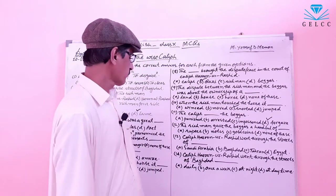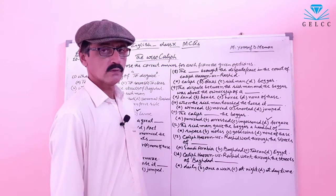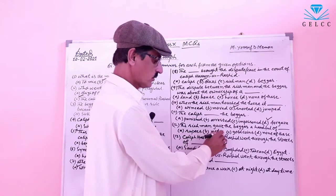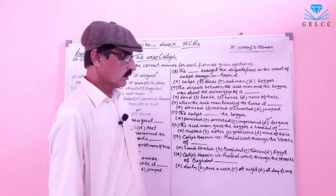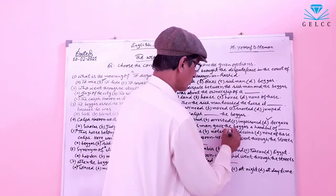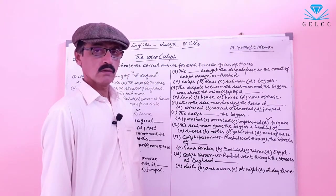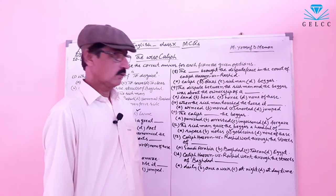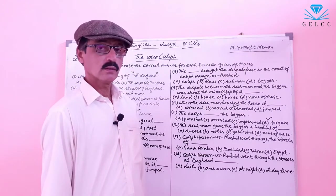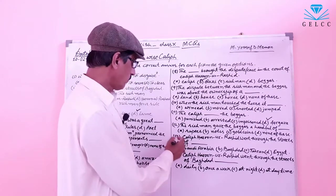Number 12: The rich man gave the beggar a handful of what? Options: A: Rupees. B: Notes. C: Golden coins. D: None of these. The correct answer is option C — gold coins. The rich man gave the beggar a handful of gold coins.